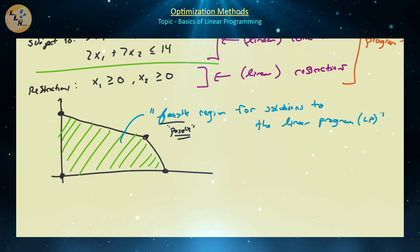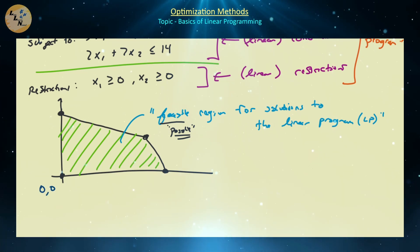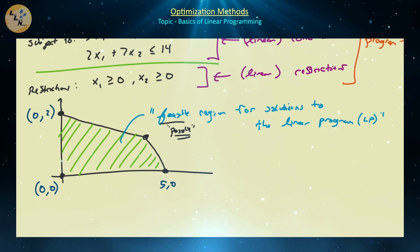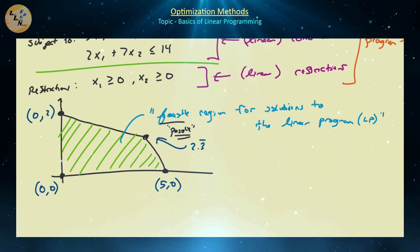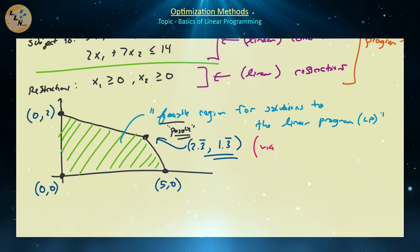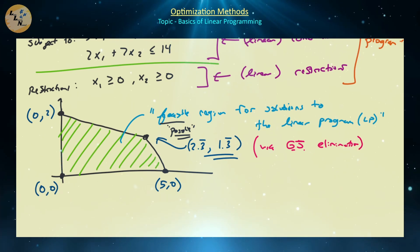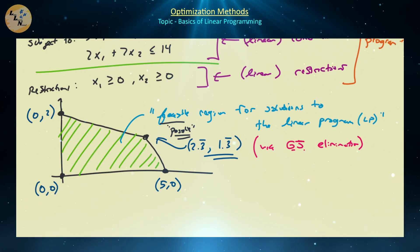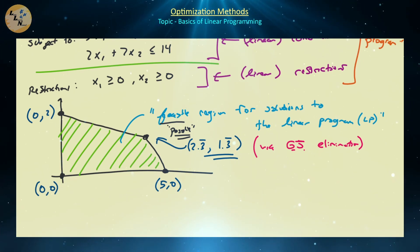The corner points of the feasible region can be found using Gauss-Jordan elimination. The points are: (0, 0), (0, 2), (5, 0), and approximately (2.3̄, 1.3̄) — or exactly (7/3, 4/3) as a fraction. These corner points are typically generated via Gauss-Jordan elimination applied pairwise. When working with non-linear programs, more sophisticated methods are required.